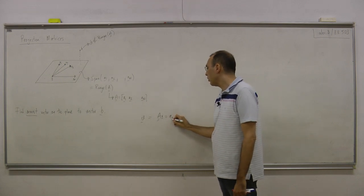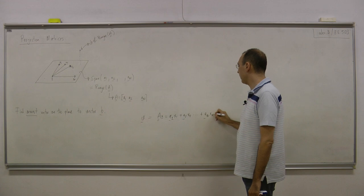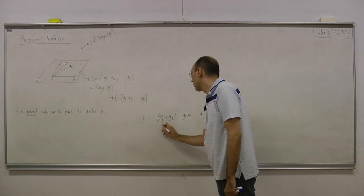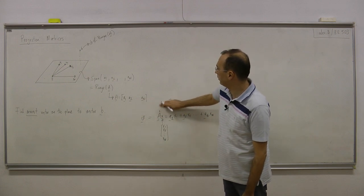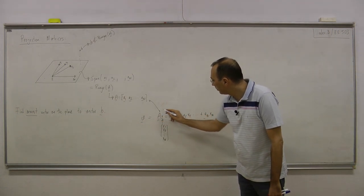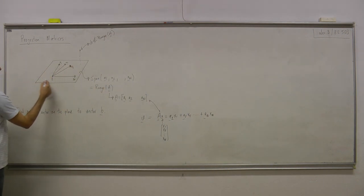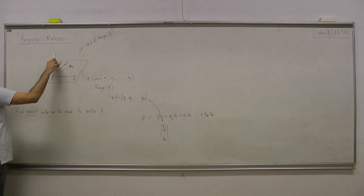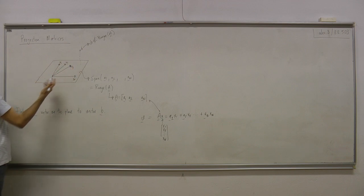A times x is nothing but a1 times x1, a2 times x2, and an times xn, where x is the vector [x1, x2, ..., xn]. After this multiplication, I get a linear combination of columns. All possible linear combinations of columns give us this space. This is an infinite, infinitely extending plane — the drawing is just an illustration.